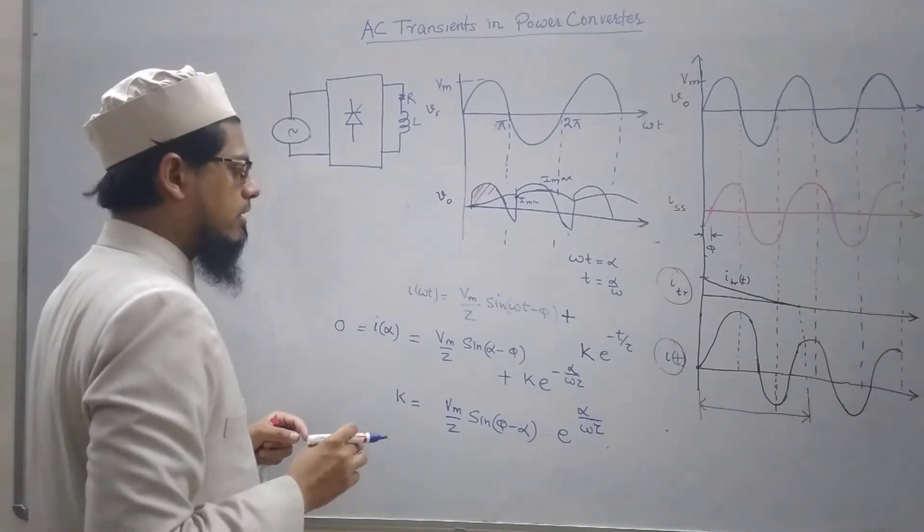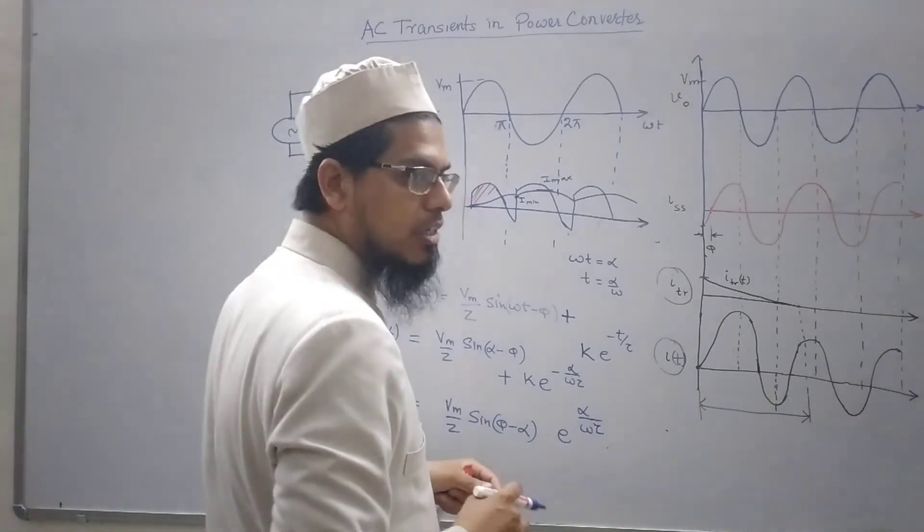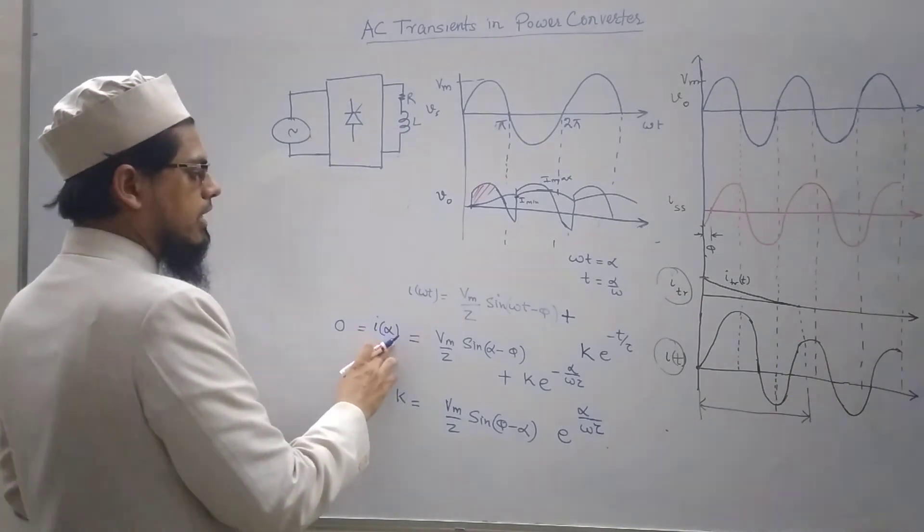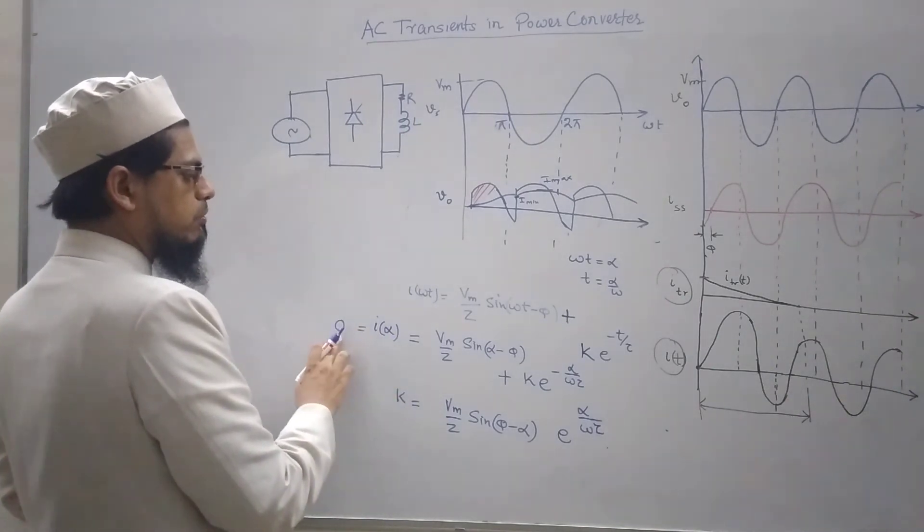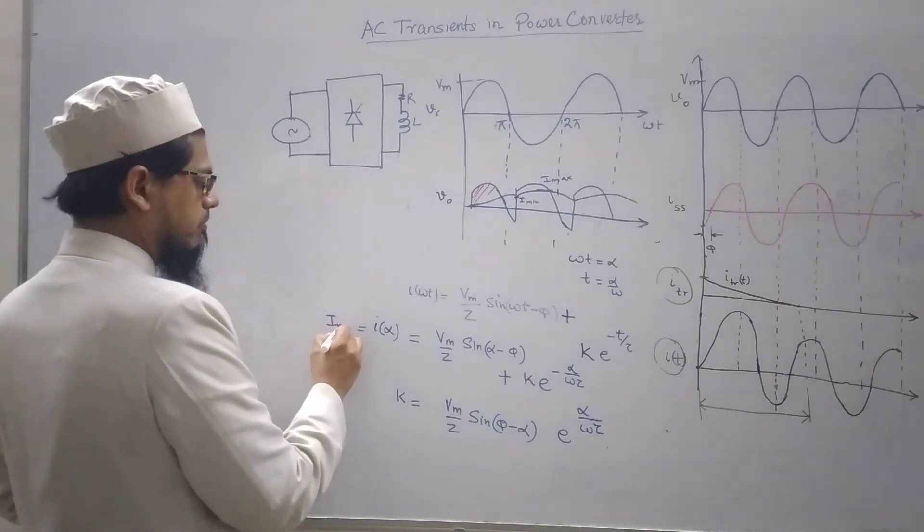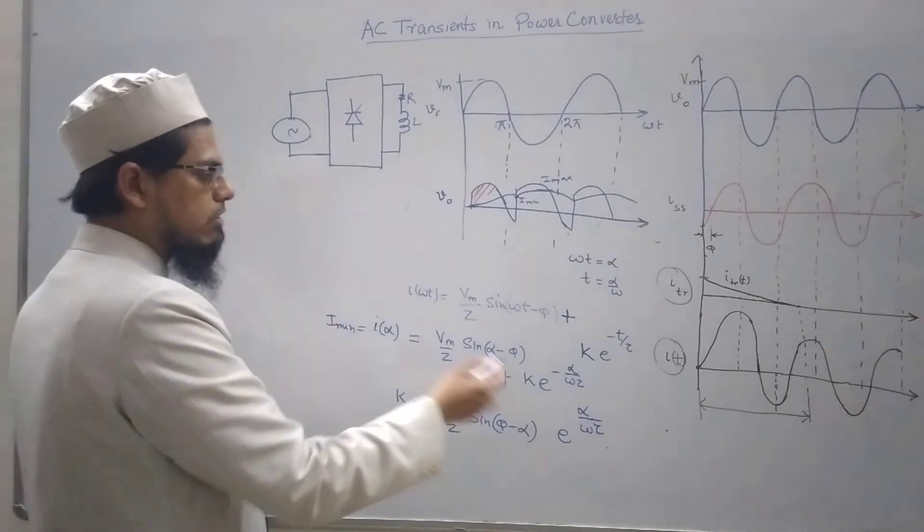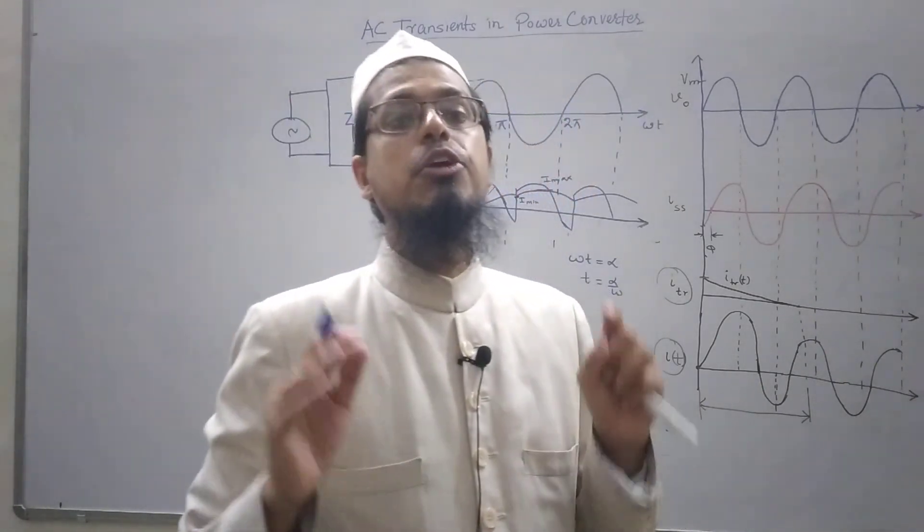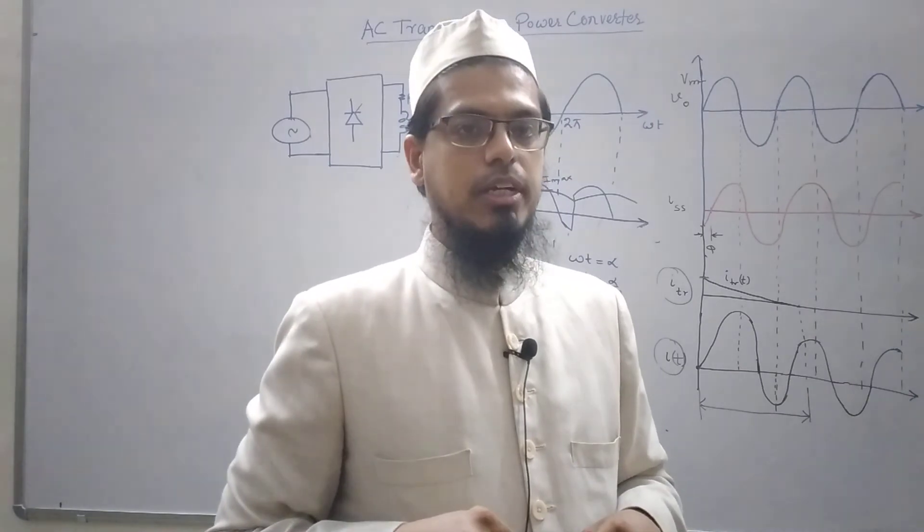In this case, what would be the expression of current? In this case now at I alpha I do not have to put I equal to zero, but rather I would be putting this equal to I minimum and then finding out the value of k and putting it back into the expression for the current, and that would be the final expression for the current flowing in the circuit.